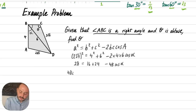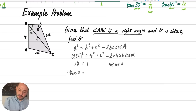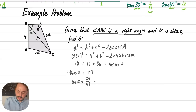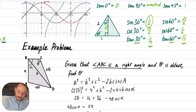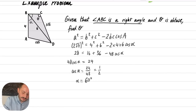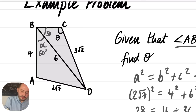Rearranging: 48 cos α = 16 + 36 − 28 = 24, so cos α = 24/48 = ½. From our exact values, cos 60° = ½, so alpha = 60°. Going back to the diagram, alpha is 60°. Since angle ABC is a right angle, the remaining angle must be 30°. Now we can use the sine rule on the second triangle, which has two sides and two angles.